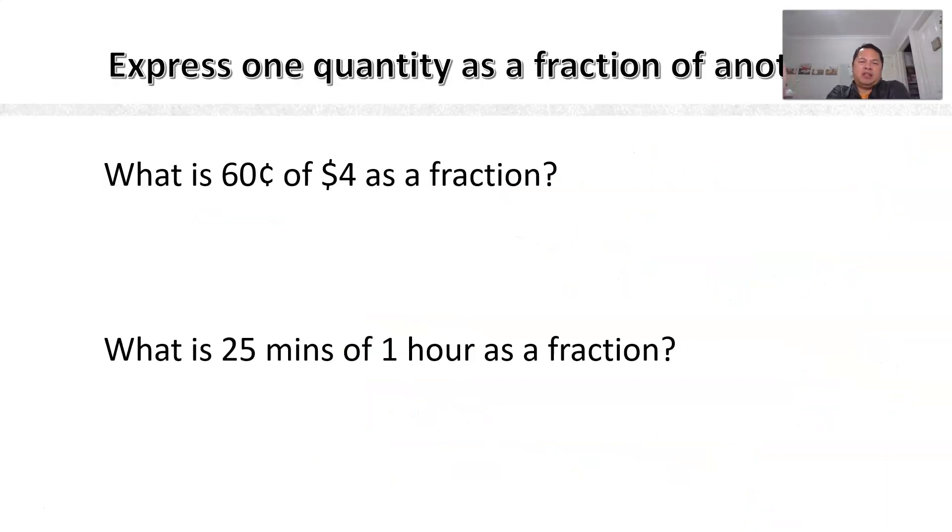So next part is about expressing one quantity as a fraction of another. So always remember, whenever you need to do that, you need to have common grounds, which is common units. So for this case, I think it might be easier to change everything to cents. So this is 400 cents. So that's why 60 cents out of 400 cents. Simplified. 3 out of 20. 25 minutes out of an hour, so this is 60 minutes, isn't it? So it will be 25 out of 60. Both can be divided by 5. 5 out of 12 is the answer.